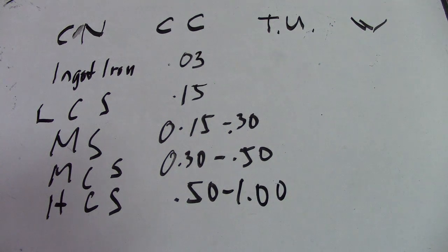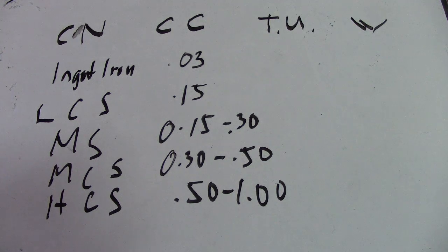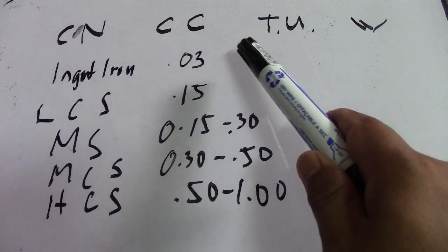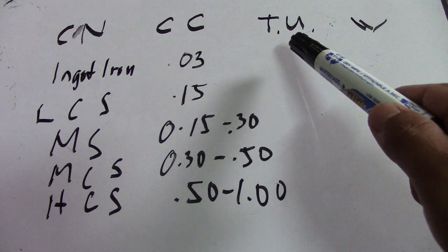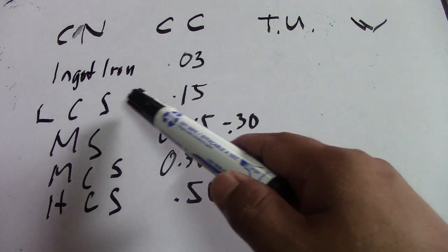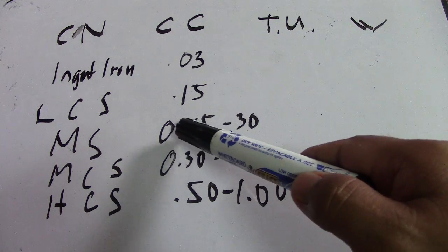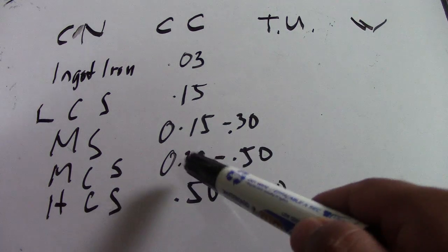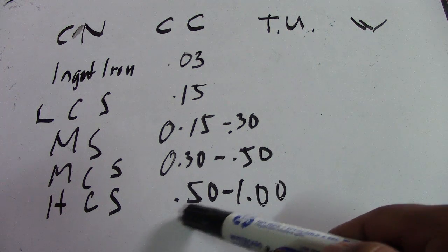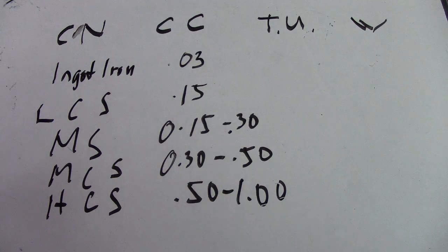For typical use: ingot iron is used for galvanizing, strip, and enamelling. Low carbon steel is used for welding electrodes, special plate, shapes, sheet and strip. Mild steel is used for structural shapes, plate, and bar. Medium carbon steel is used for machinery parts. High carbon steel is used for springs and dies.